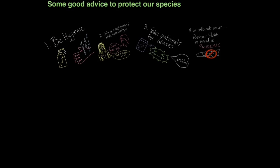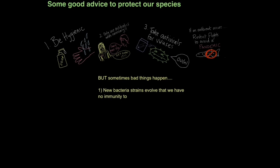Sometimes, in spite of all our precautions, bad things can just happen. For example, new bacteria strains can evolve that we have no immunity to, and that can claim a lot of human life. Also, viruses evolve very rapidly — what that really means is that antigens change on the surface of their protein coat. So we need new vaccines to fight these viruses, and sometimes it takes time to develop them, and in that time a lot of human life can be claimed.